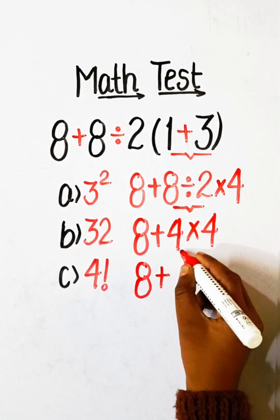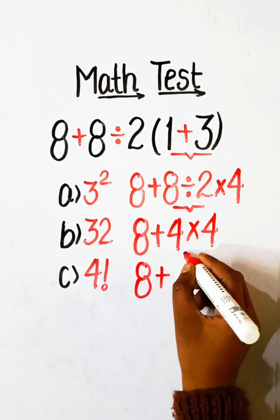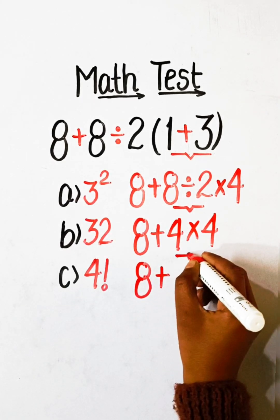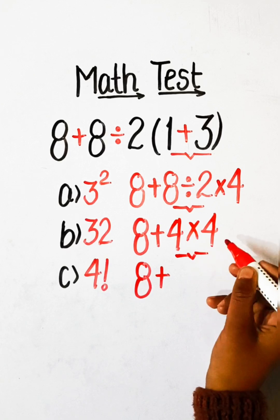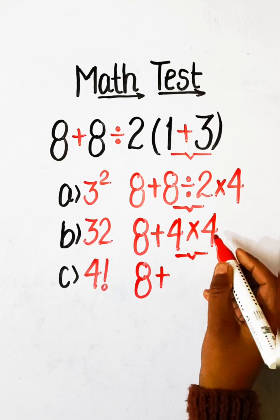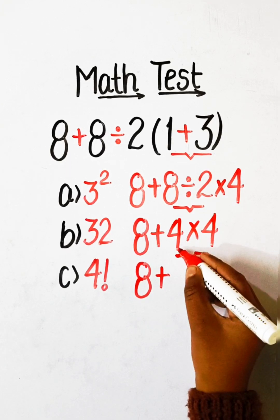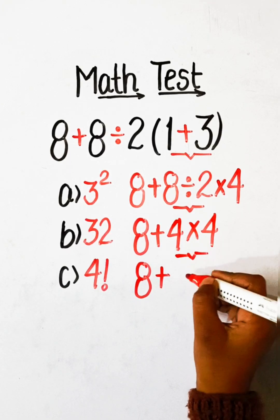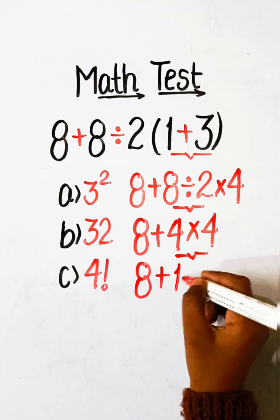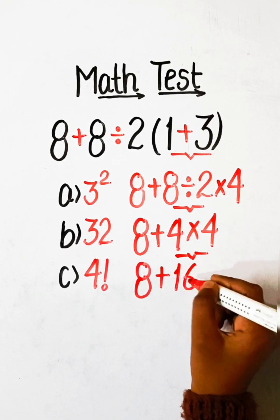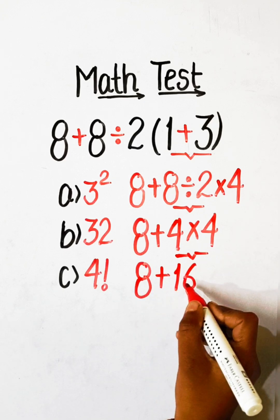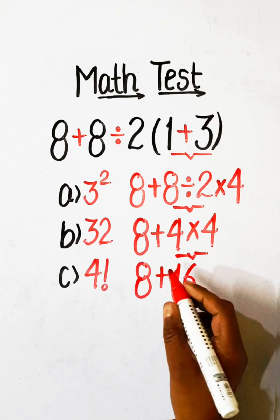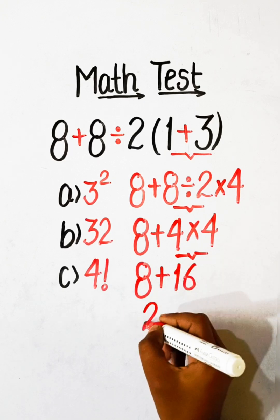Here we have to multiply first, so 4 multiplied by 4 is 16. Then 8 plus 16 is 24.